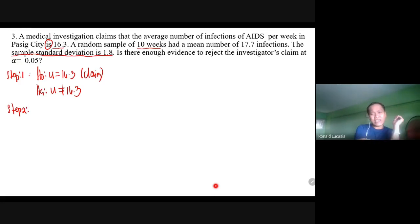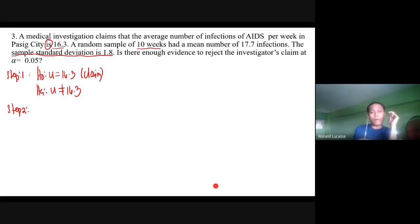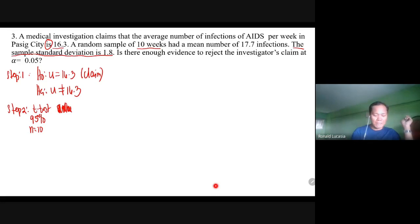Step two: find the critical value. We use T-test because there is no population standard deviation given — only the sample standard deviation of 1.8. The confidence level is 95% and n = 10. Looking up the T-test table, the T-critical value is 2.262.